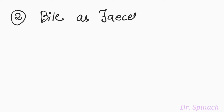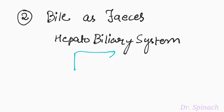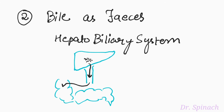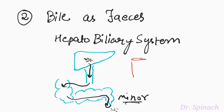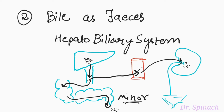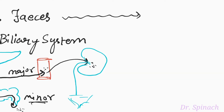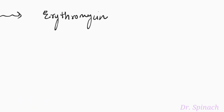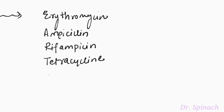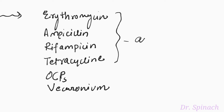Moving forward, the next route of drug elimination is via bile as feces. This can be achieved through the hepatobiliary system. Drug after metabolism in the liver is excreted into bile and via bile into the feces. This is, however, a minor part of the drug; the major part is absorbed back into the bloodstream from the gut and excreted out via kidney. The drugs that attain high concentrations in bile include erythromycin, ampicillin, rifampin, tetracycline, oral contraceptives, and vecuronium — the first four of which are antibiotics.